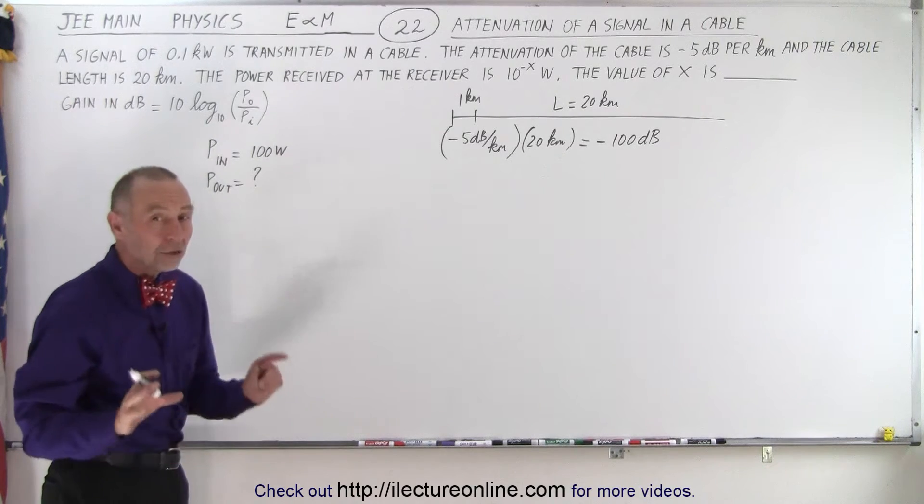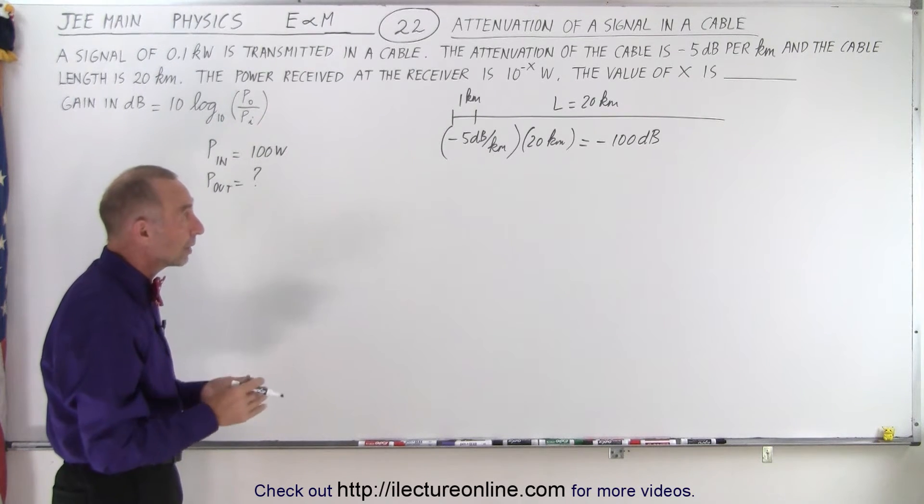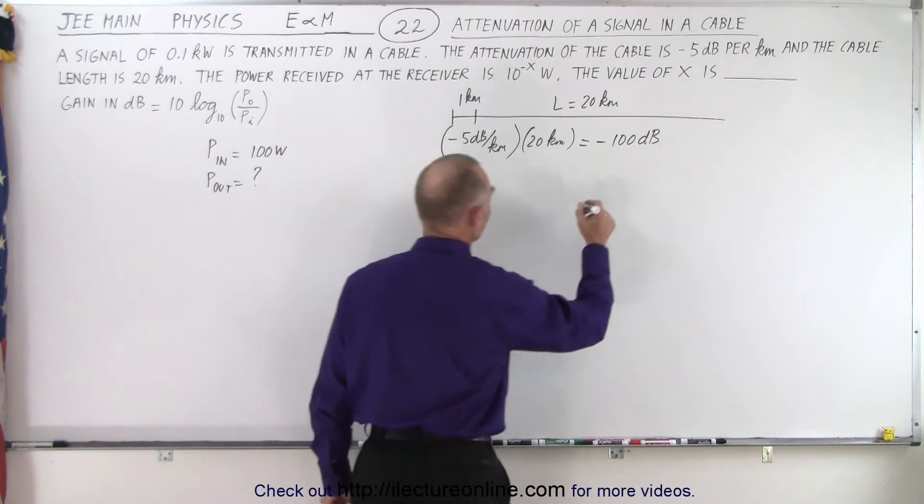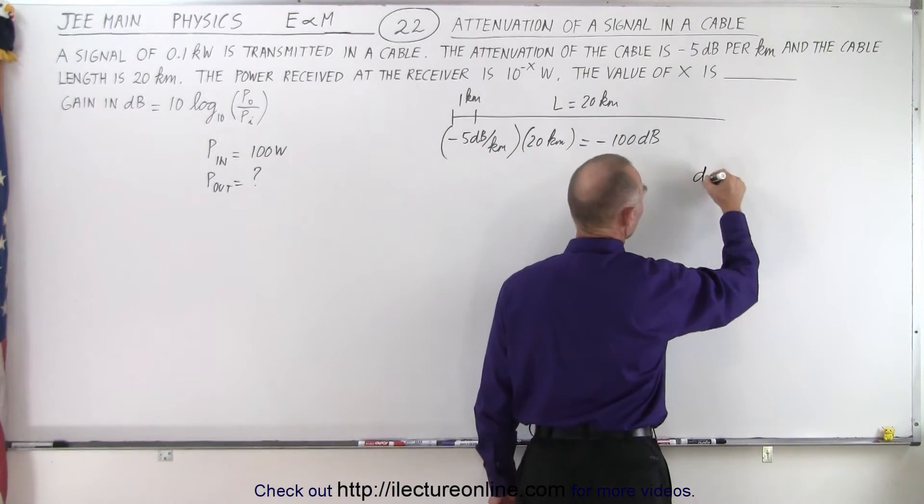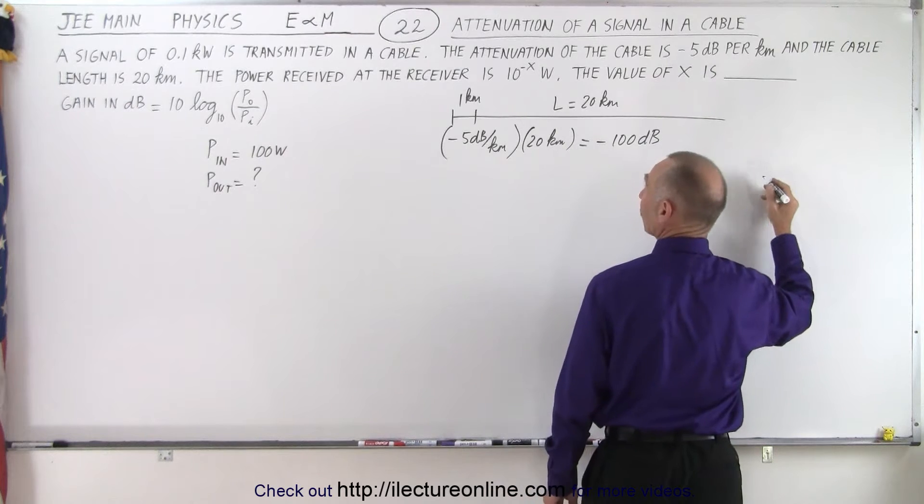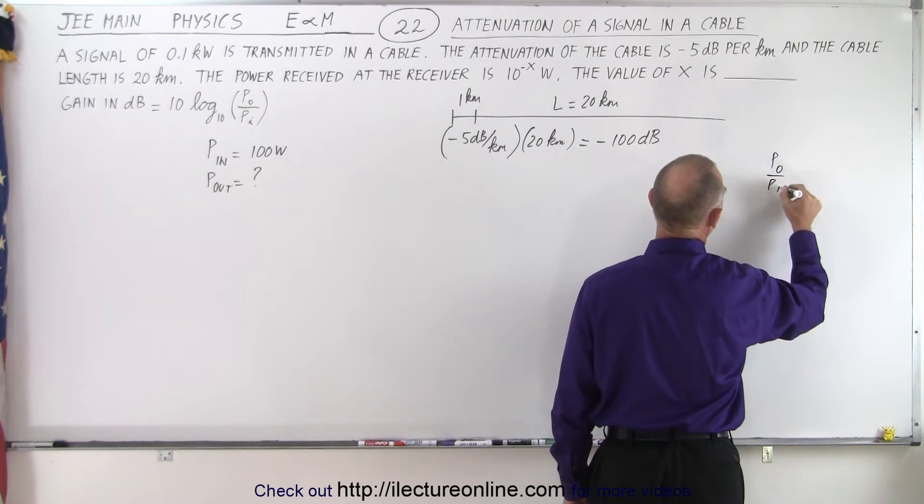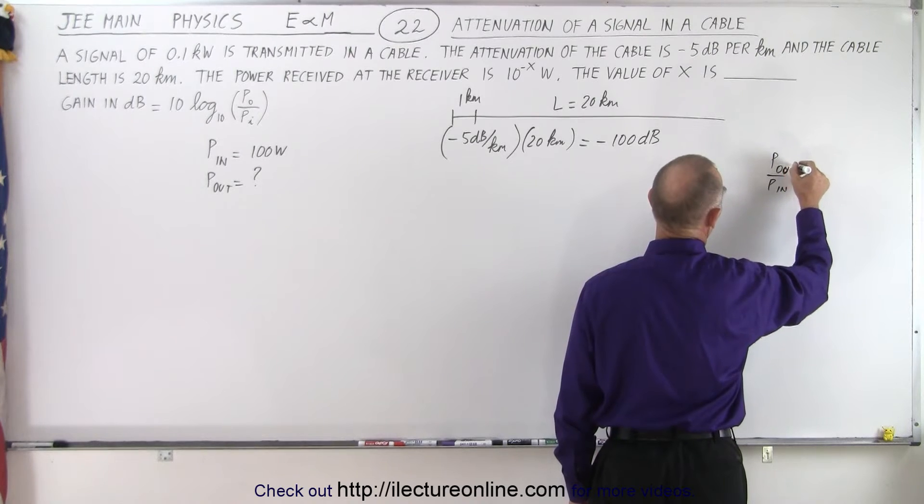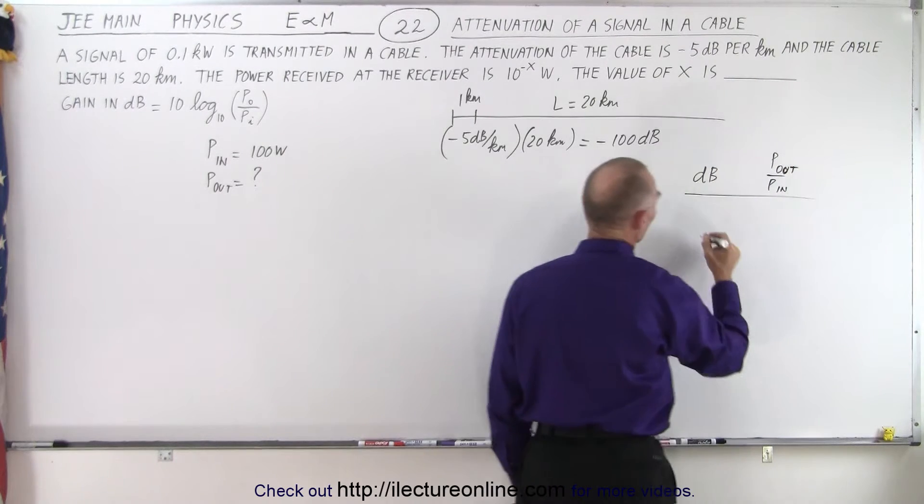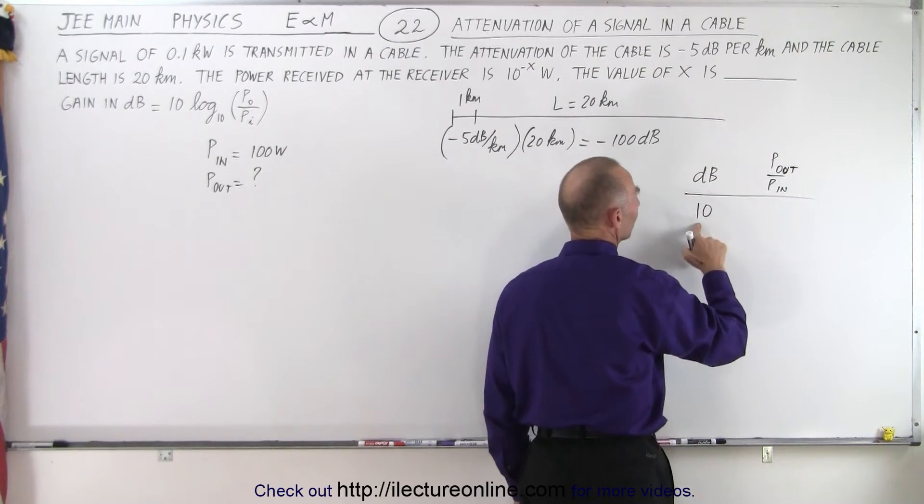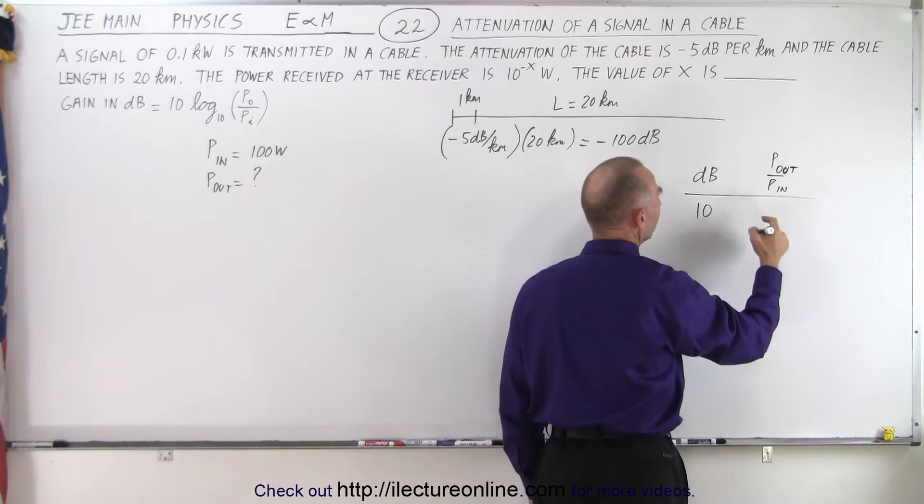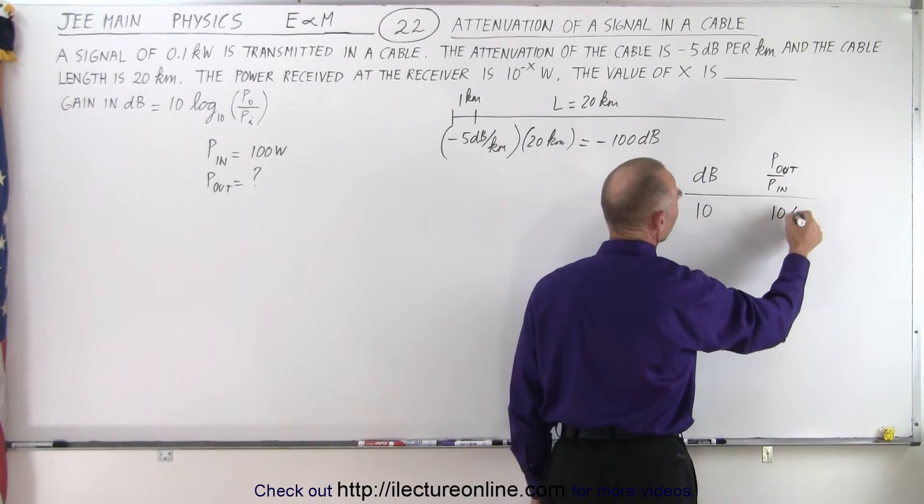The way you can solve this problem quickly is to realize that with decibels we know - let me give you a little table here. We have decibels and the ratio of power, power out over power in. If we have a gain of 10 decibels that means the power out over the power in is 10 to 1.